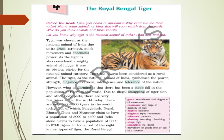Humans are also responsible for their extinction. Now this chapter will tell us about the Royal Bengal Tiger. Tiger was chosen as the national animal of India due to its grace, strength, quick movement, and enormous power.